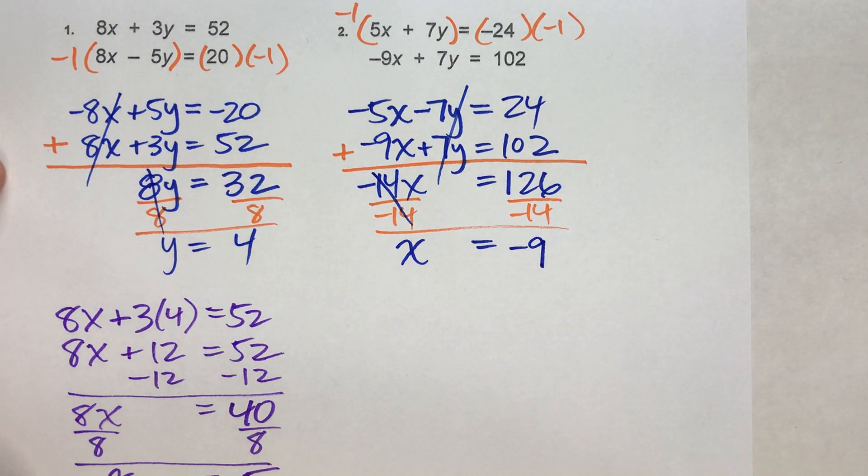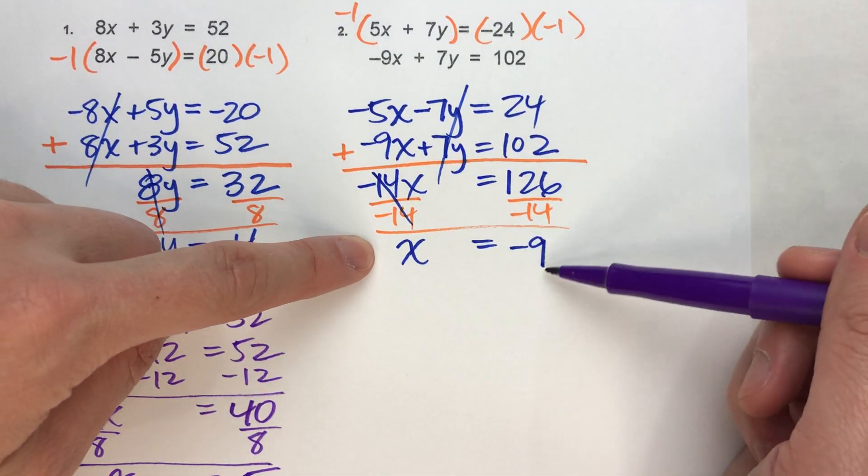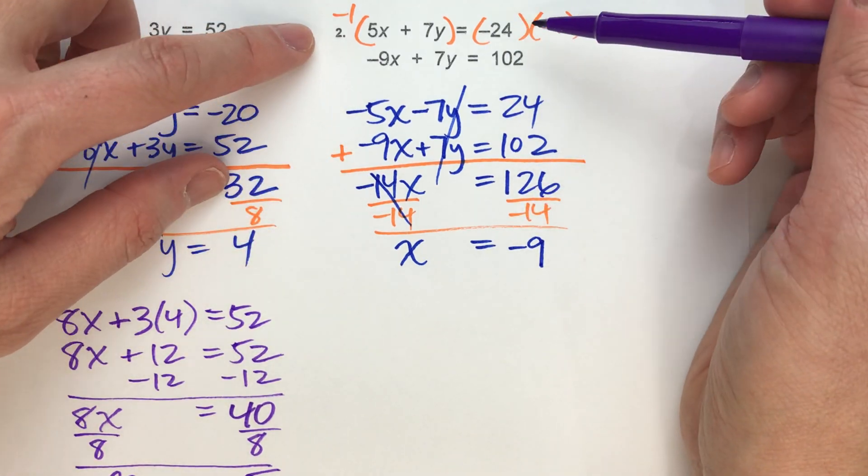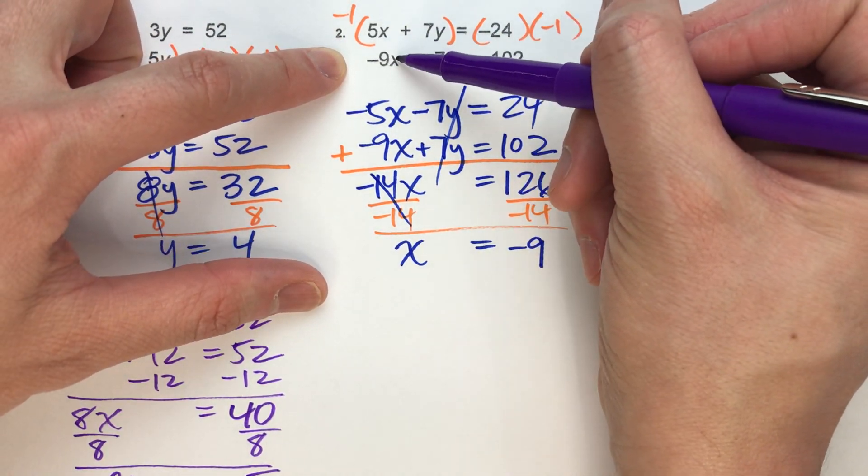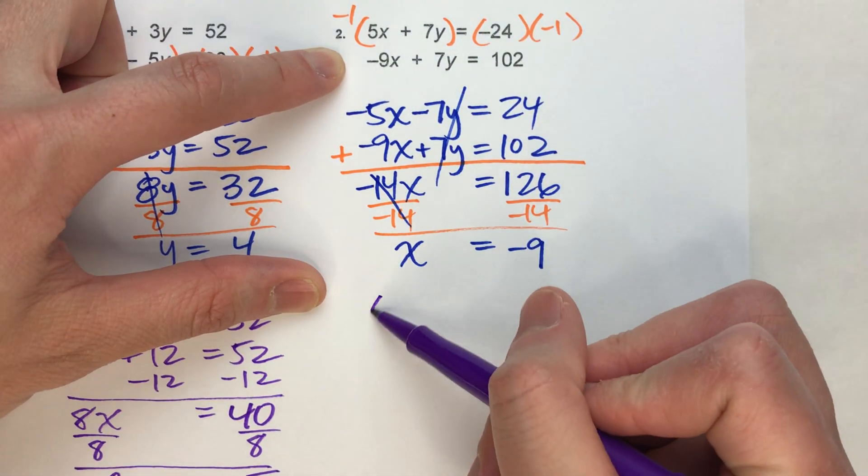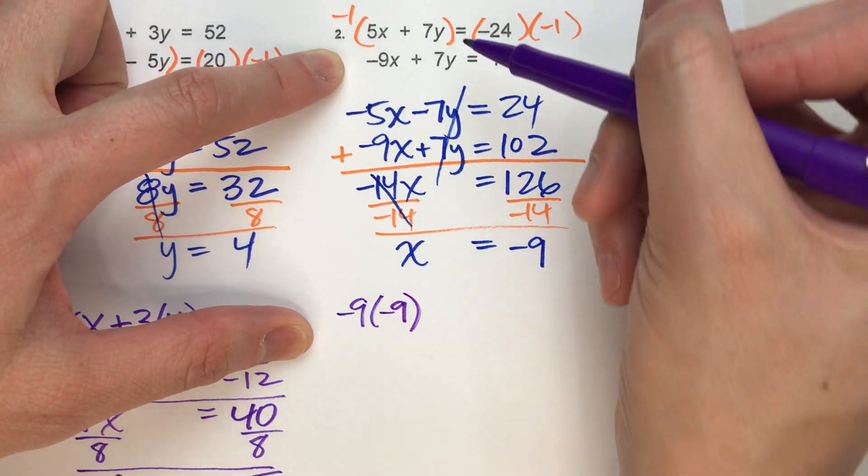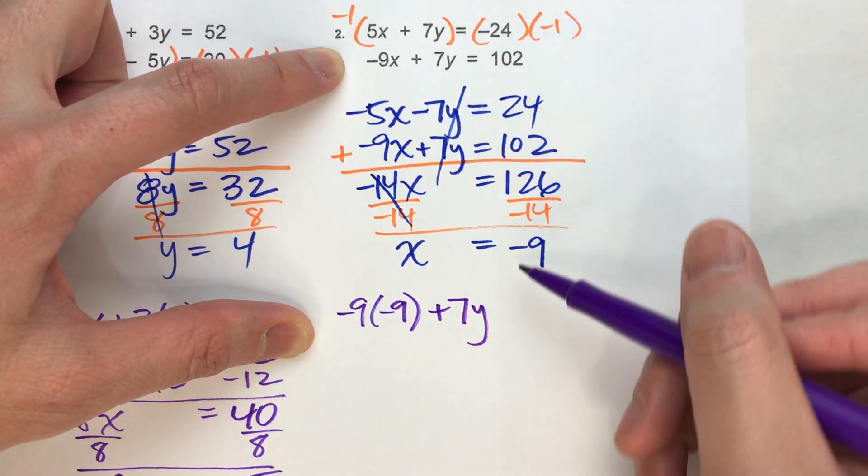Halfway there. We still need to get y, though. And just like last time, I could put -9 in for x, and I can choose which equation I'm going to pick. I'll pick the second one. So it's going to be -9 times whatever x is, and we just found out x is also -9. So it's -9 times -9 plus 7y, we still don't know what y is, equals 102.